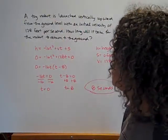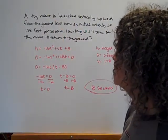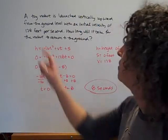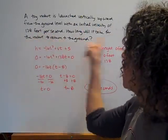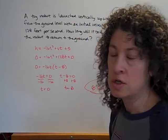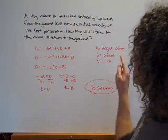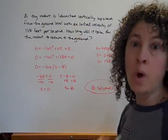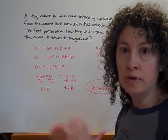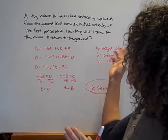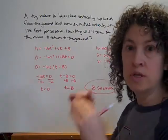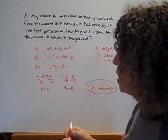So we've got a toy rocket is launched vertically upward from the ground level with an initial velocity of 128 feet per second. How long will it take for the rocket to return to the ground? So the information that I'm pulling from this word problem is the height that we're asking about. The height we want to know about. So the height and the time that are related to each other. We want to know when this is gonna be at a height of zero. So when does it come back to that ground level?